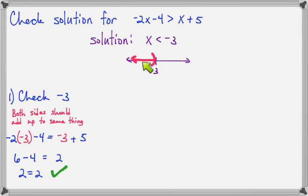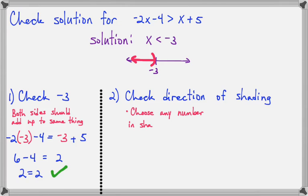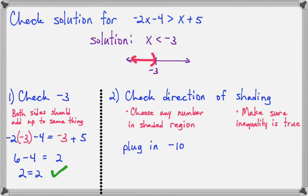Now I have to decide if the shading is going the right way. So I can pick any number that's in the shaded part. And I happen to pick negative 10. And so here it is with negative 10 plugged in. All I want to do is make sure that when I work it out that it really is true. So negative 2 times negative 10 is 20, and 20 minus 4 says it's greater than negative 5. So these are not going to be equal because this is an inequality. So the left side came out 16, and 16 certainly is bigger than negative 5. So that tells me that my shading is correct.